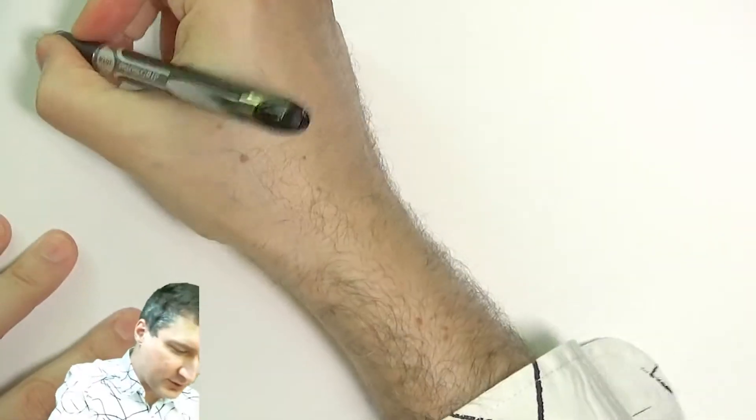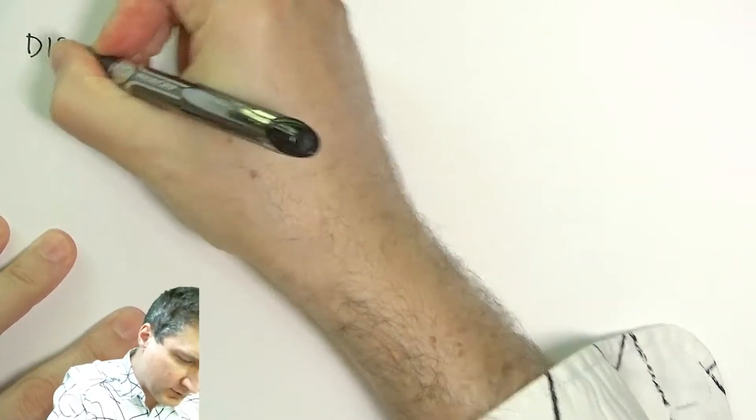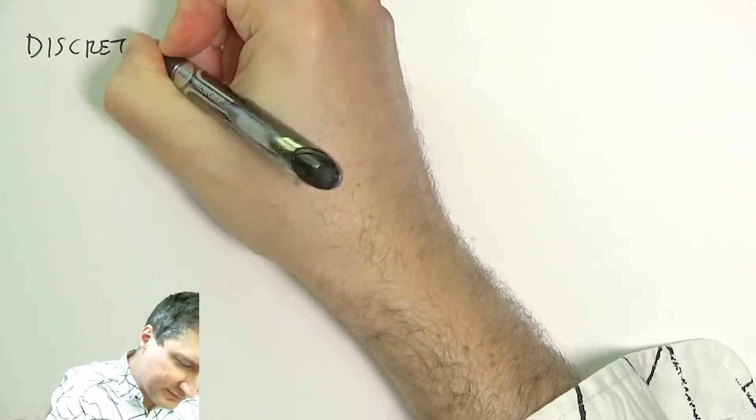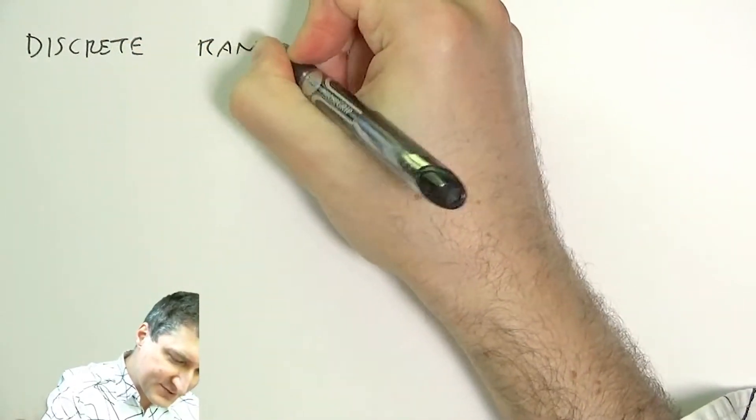Okay, so new concept and this is really important: the concept of what's called a random variable. We're going to stick with the world of discrete random variables for the first discussion.